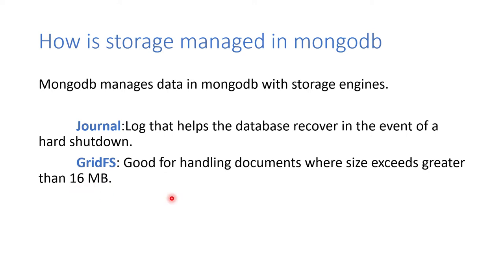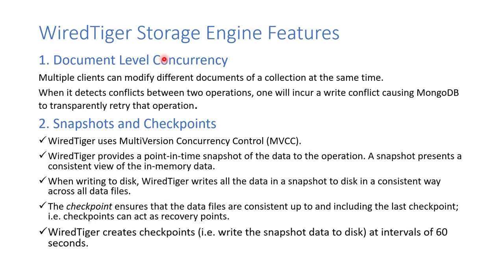This slide covers WiredTiger storage engine features. The first is document-level concurrency: in a collection, multiple clients can access different documents simultaneously. If two operations try to modify the same document, MongoDB detects the conflict and resolves it automatically.